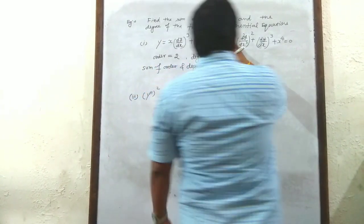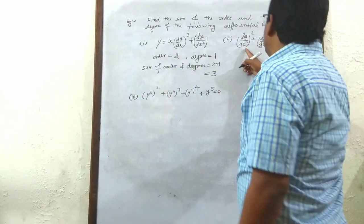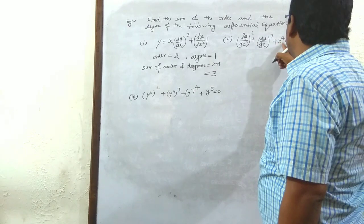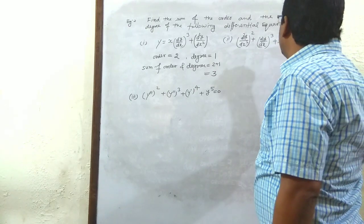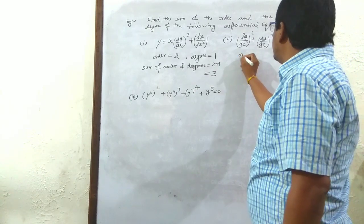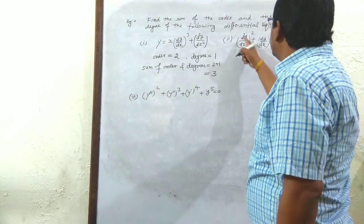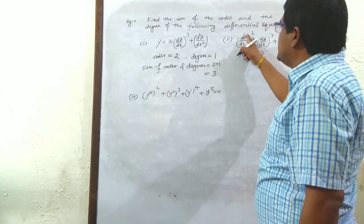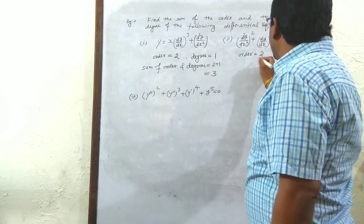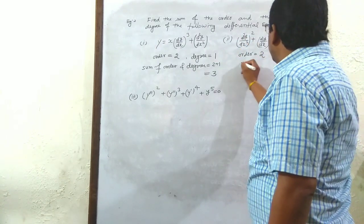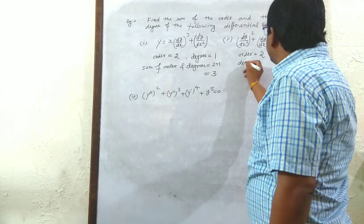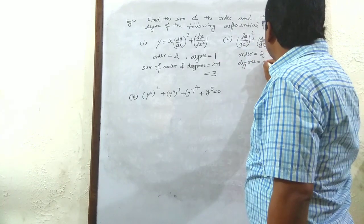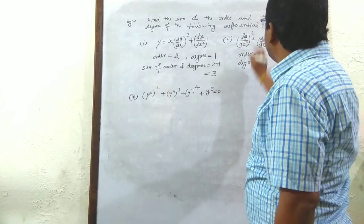Second differential equation: (d²y/dx²)² + (dy/dx)³ + x⁴ = 0. Order equals 2 because the highest order derivative is d²y/dx², and degree equals 2 because its exponent is 2.